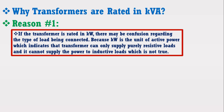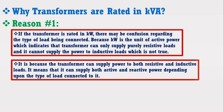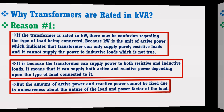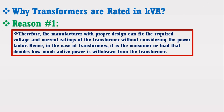This is because kW is the unit of active power, which indicates that the transformer can only supply purely resistive loads, and it cannot supply power to inductive loads — which is not true. The transformer can supply power to both resistive and inductive loads, meaning it can supply both active and reactive power depending upon the type of load connected. However, the amount of active and reactive power cannot be fixed due to unawareness about the nature and power factor of the load. Therefore, the manufacturer can fix the required voltage and current rating of the transformer without considering the power factor.